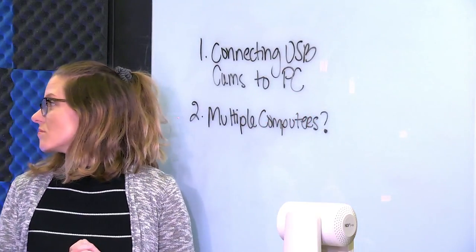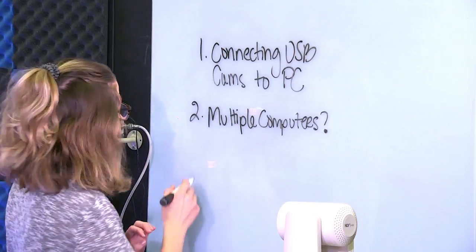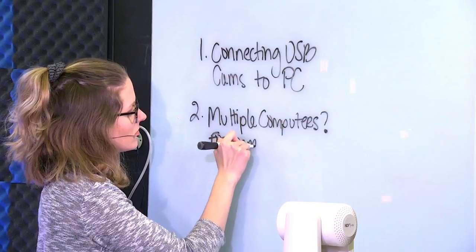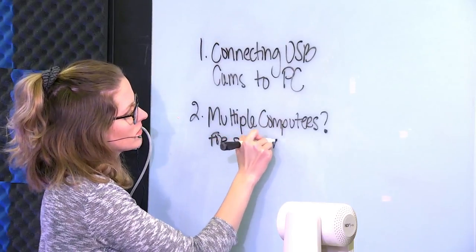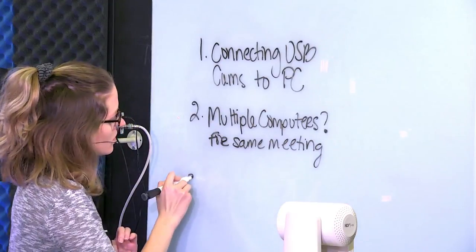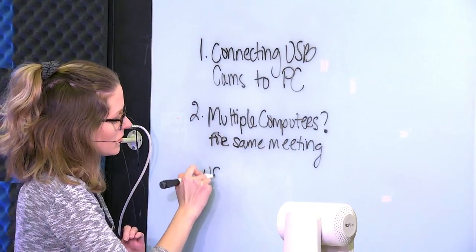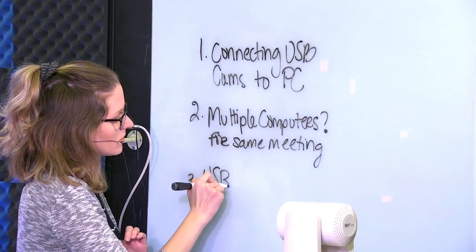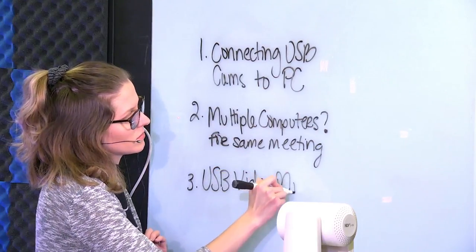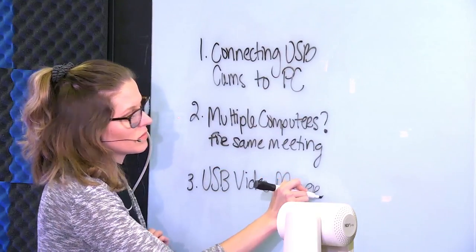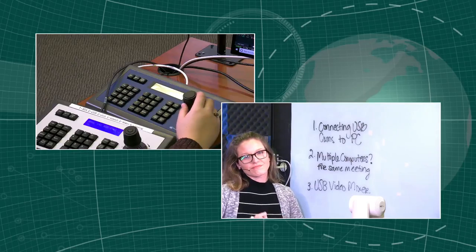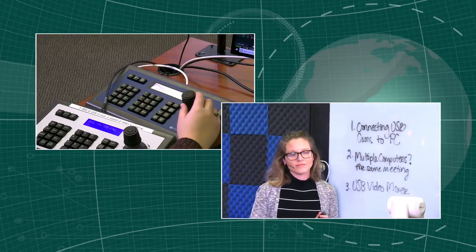Now, this doesn't work when you have active speaker on, and we'll talk about that. That's approach number two. Number three is what I call a USB video mixer. This is a video mixer that can mix together multiple cameras into a USB input, and that USB input in your computer is pulled up in Skype, GoToMeeting, or WebEx. That's the most expensive way, but it's a really great way to do it.